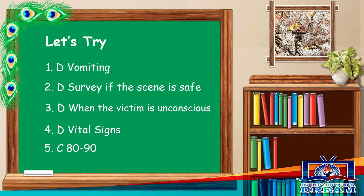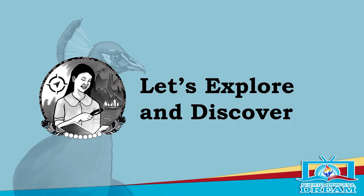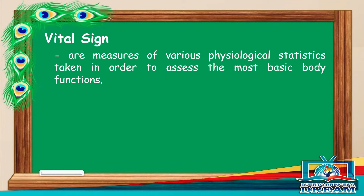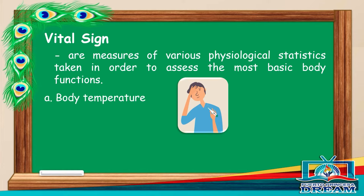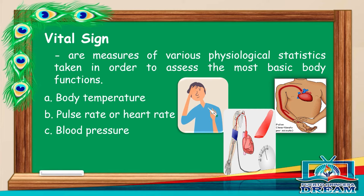Are you ready to explore? Now we are here to explore and discover our video lesson today. Vital signs are measures of various physiological statistics taken in order to assess the most basic body functions. It includes the body temperature, pulse rate or heart rate, blood pressure, and respiratory rate.